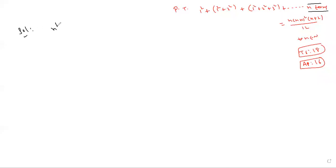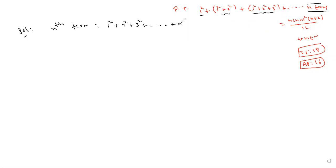First step: write the nth term of the given series. Observe — the first term is 1², the second term is 1² + 2², the third term is 1² + 2² + 3². Similarly, the nth term can be written as 1² + 2² + 3² + ... + n². This is the standard formula for the sum of squares of n natural numbers: n(n+1)(2n+1)/6.